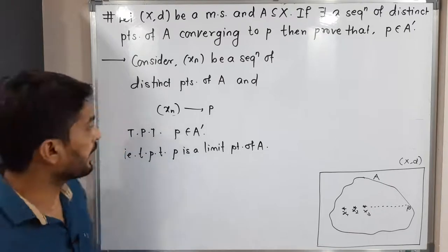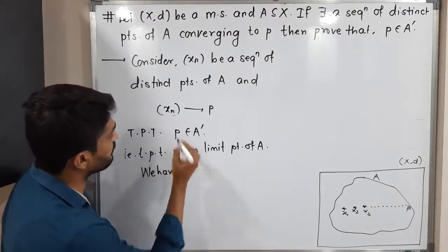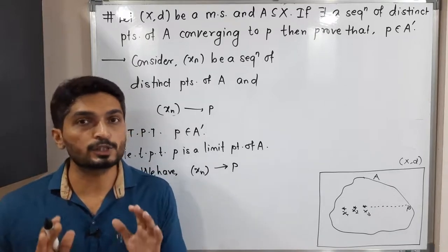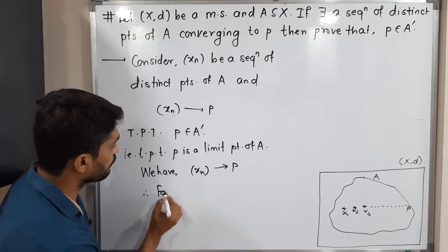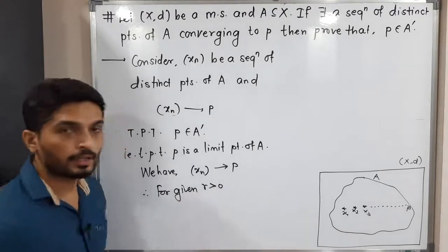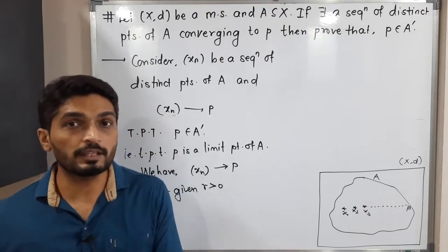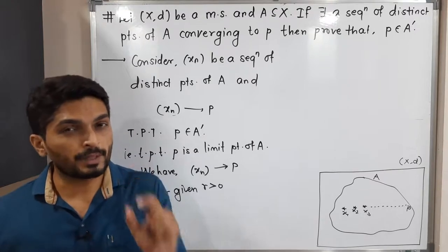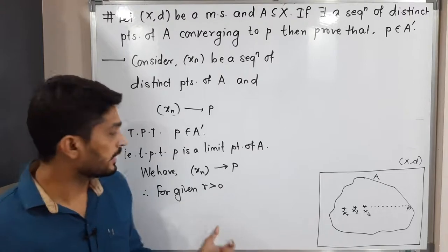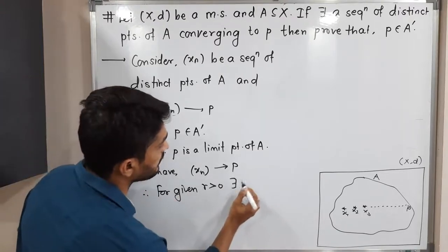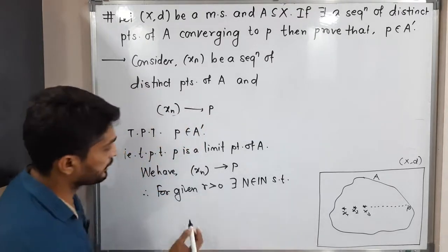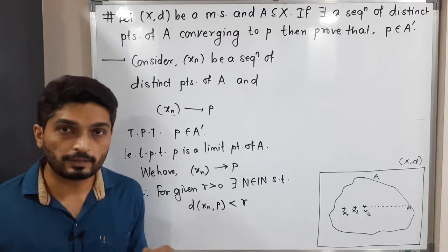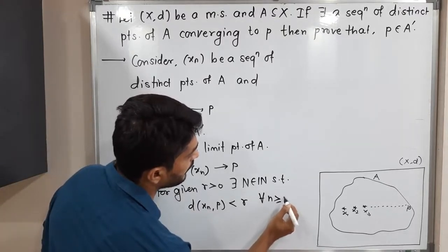So we start with the given information. We have Xn converges to P. You are familiar with the definition of a convergent sequence, and same definition I am going to use. So therefore, for given R greater than 0 — actually in the definition of convergent sequence we start with for given epsilon greater than 0, but instead of epsilon I am considering R, since R has the same meaning as a very small positive real number — there exist N belonging to the set of natural numbers such that d(Xn, P) is less than R for all n greater than or equal to capital N.